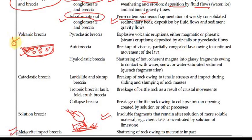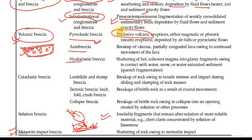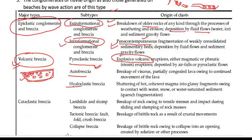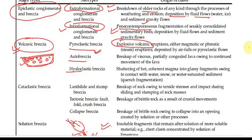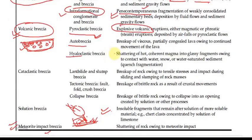After epiclastic, we have volcanic breccia — pyroclastic rocks. Pyroclastic simply means volcanic origin. Volcanic-origin agglomerates are called pyroclastic breccia. Volcanic fragments are generally not rounded because they do not travel far — that's why they are breccia in nature. Depending upon the type of clast, we have autobreccia — breakup of viscous, partly congealed lava — and hyaloclastic breccia, which is made of glassy fragments.